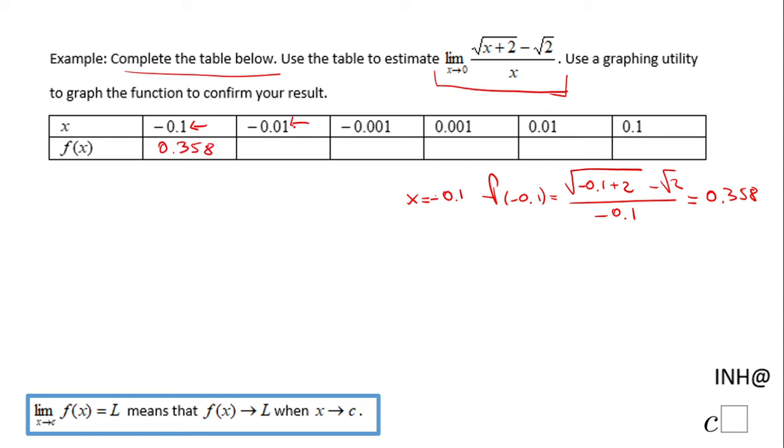Similarly, we're going to do the second value in this table, negative 0.01, and I end up with 0.354. For negative 0.001, the value is 0.353.